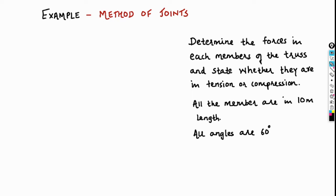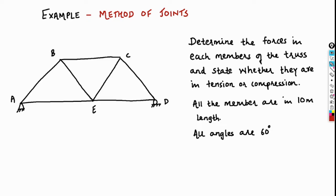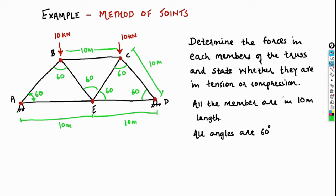We have this problem statement. They are asking us to find forces in each member of the truss. After finding the forces in each member, we have to state whether those are in tension or in compression. They have given the length of all the members, which is 10 meters, and the included angle, which is 60 degrees. The red circle indicates that all the members are connected through hinge connection. The loads are given at joint B and at joint C, and those are vertically downward.